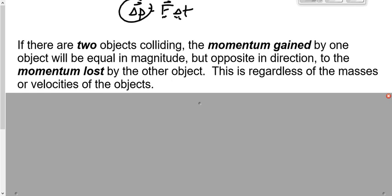When you have two objects colliding with each other, not only will the forces be equal and opposite, but the impulse will be equal and opposite as well. In other words, the momentum gained by one is equal to the momentum lost by the other one. And it doesn't matter what the mass or the velocity of the objects were.